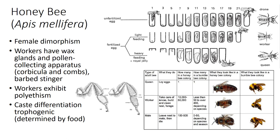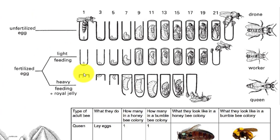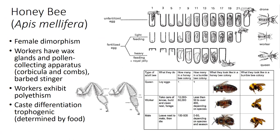Most bees provision their larvae with nectar and pollen rather than animal material. The caste differentiation is largely trophogenic, determined by the quantity and quality of the larval diet. Future queens are given royal jelly that is high in sugar and contains a protein called royalactin. The worker exhibits polyethism—different jobs at different ages—and juvenile hormone is involved in these behavioral changes. The queen maintains control over the workers' reproduction through pheromones, inhibiting ovarian development. Other pheromones provided by the bees are associated with alarm, orientation, colony recognition, and regulation.